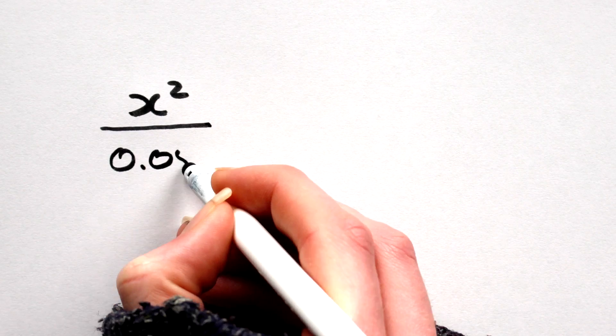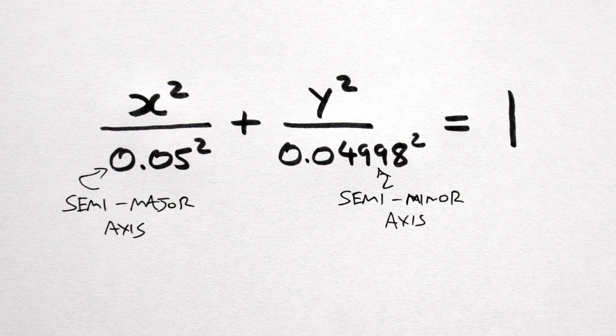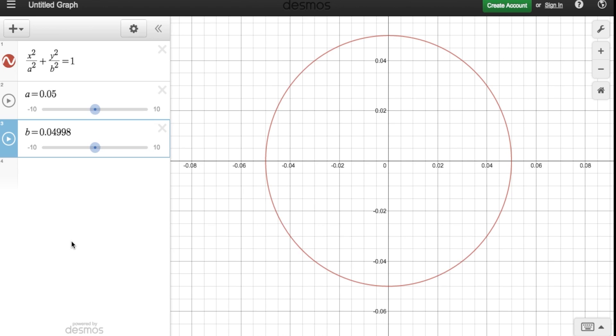Now we know both A and B values, we can graph our orbit, and it ends up looking a little something like this.